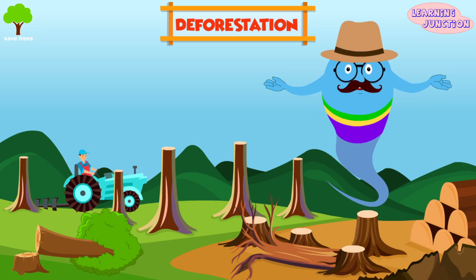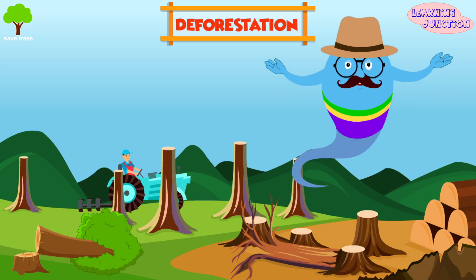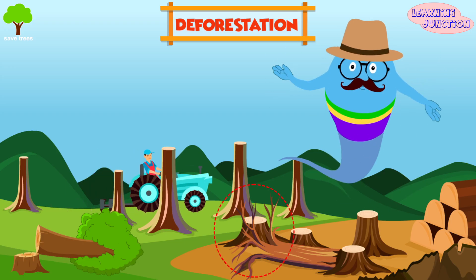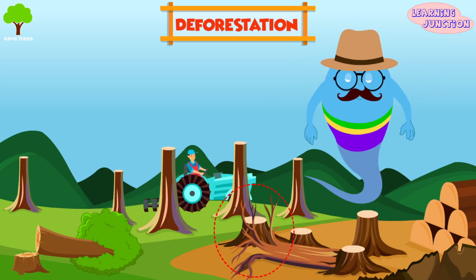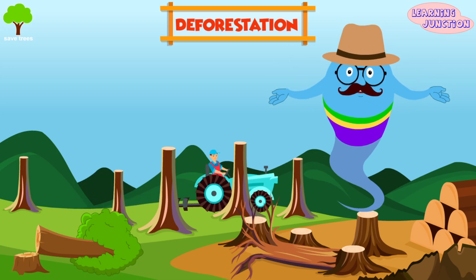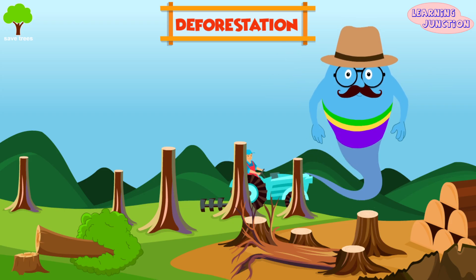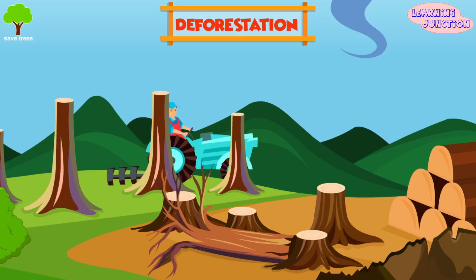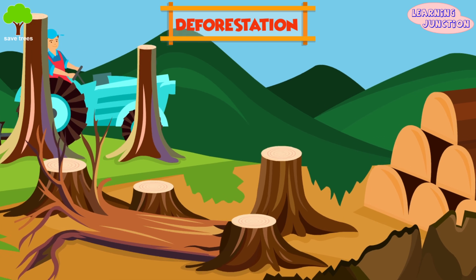Deforestation is the most important cause of landslides. The roots of trees hold the soil in place. Without trees, the stability of a slope is decreased greatly, and with a large or even a minor change, a landslide can be caused.